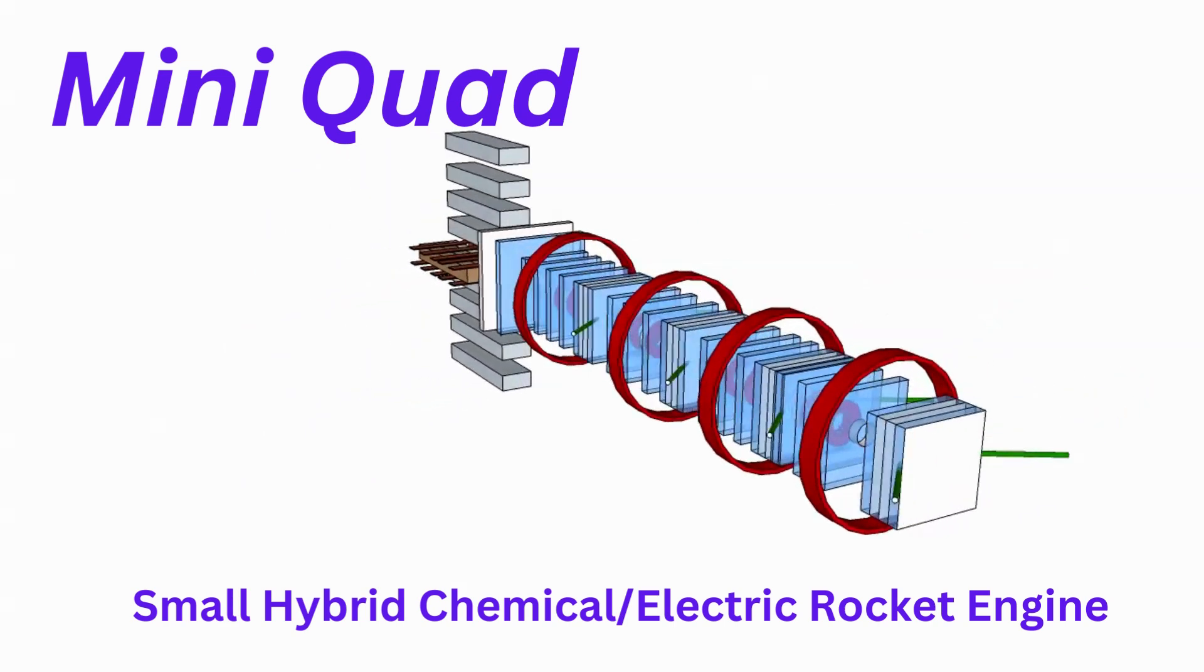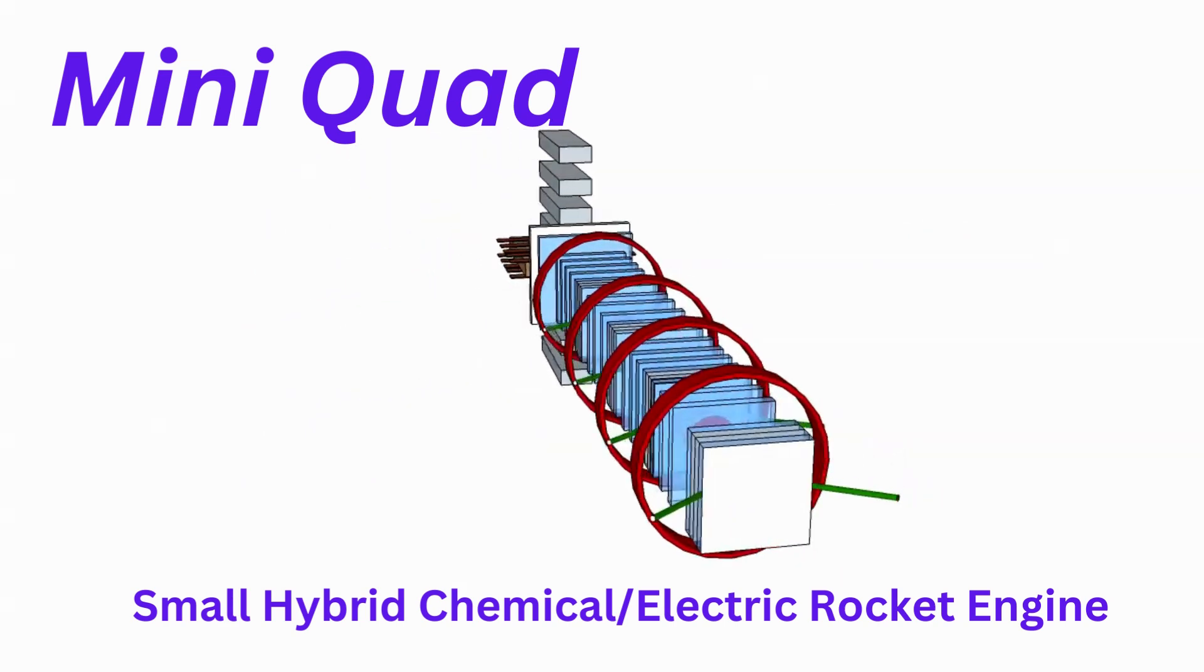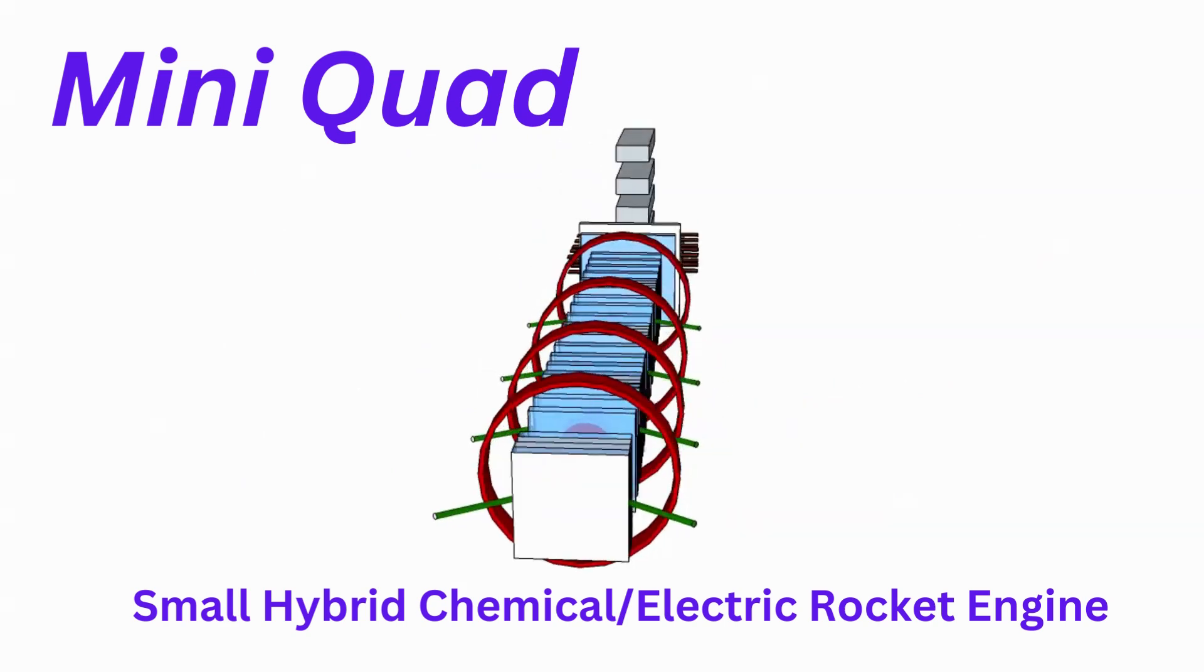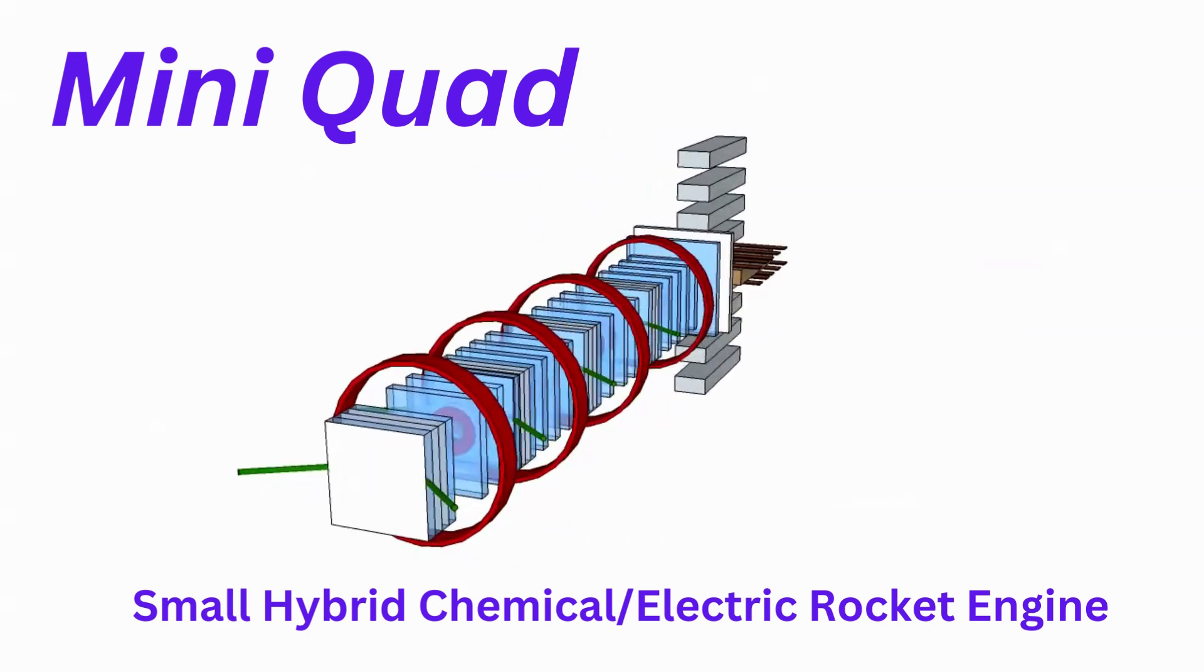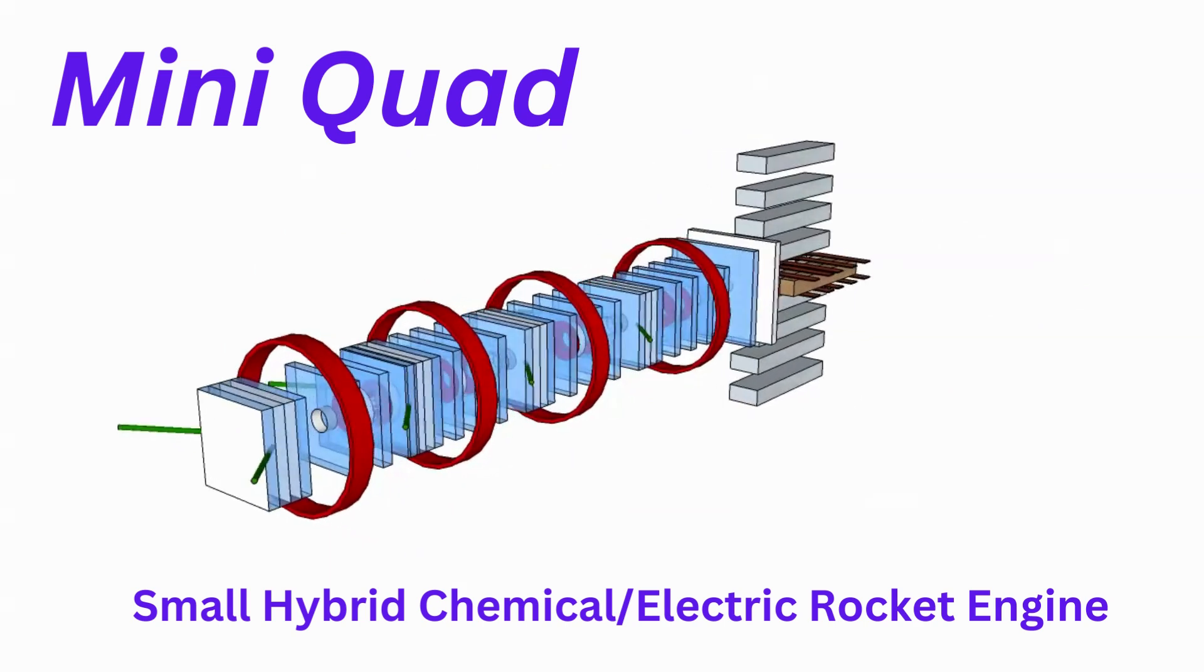MiniQuad is part chemical and part electrical engine. At its core is a hybrid acrylic paraffin oxygen hybrid rocket motor.